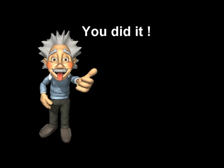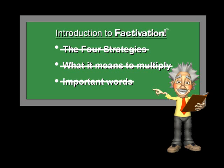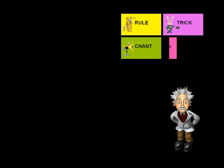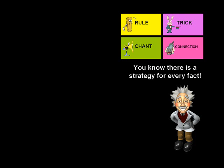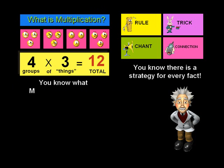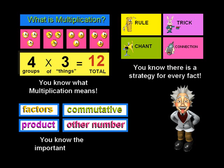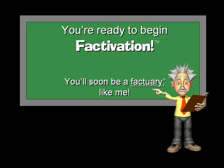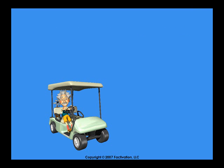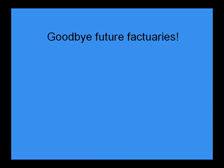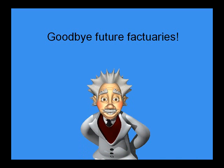Let's review what you've learned. You know there is a strategy for every fact. You know what multiplication means. And you know the important words. You're ready to begin factivation. Soon you'll be a factuary too. See you soon for your first lesson. Goodbye, future factuaries! And remember, when it comes to your brain, don't just activate it — factivate it.